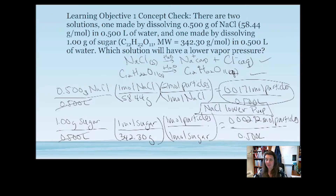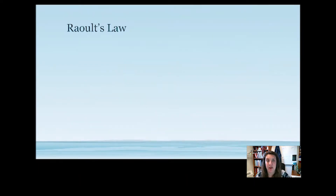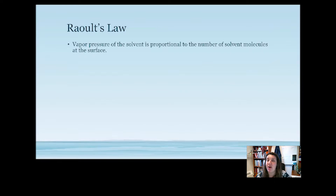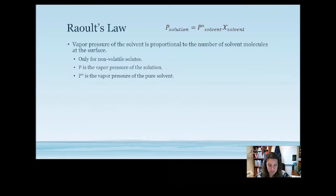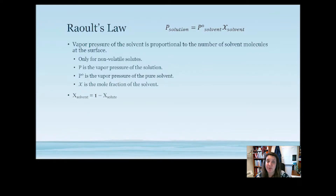We calculate vapor pressure using Raoult's Law. The equation is: the vapor pressure of our solution equals the vapor pressure of our pure solvent times the mole fraction of our solvent. This is only for non-volatile solutes. So P = P⁰ × χ_solvent, where the mole fraction of our solvent equals 1 minus the mole fraction of our solute.